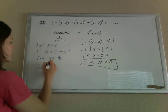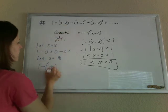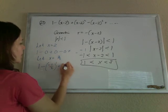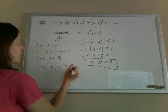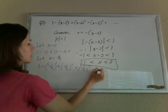So we have 1 minus, 3 halves minus 2 is negative 1 half to the first, and then I have negative 1 half to the second, and negative 1 half to the third, and so on.